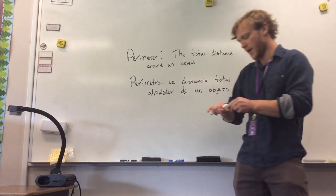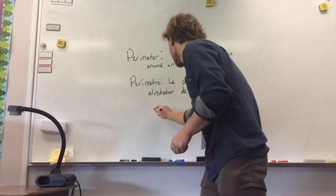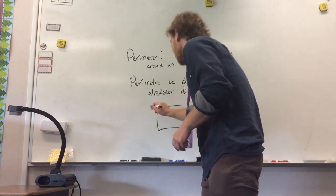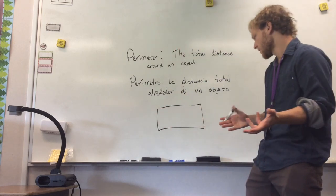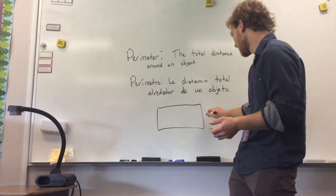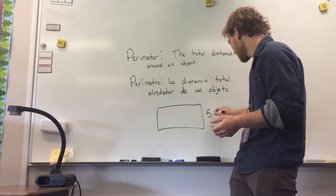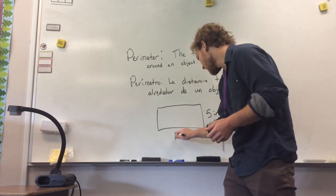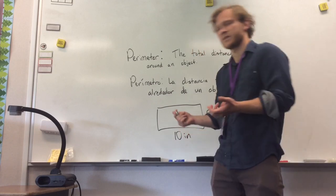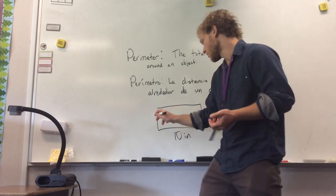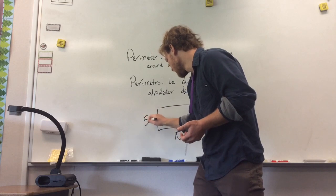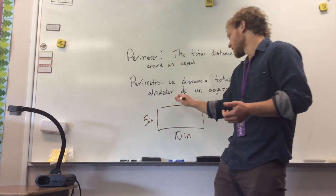If I were to draw a rectangle, let's give our rectangle some side lengths. Let's say our rectangle has a side length of 5 inches, and let's say that's 10 inches. Because this is a rectangle, we know these sides are equal lengths, so this is 5 inches as well, and these are 10 inches as well.